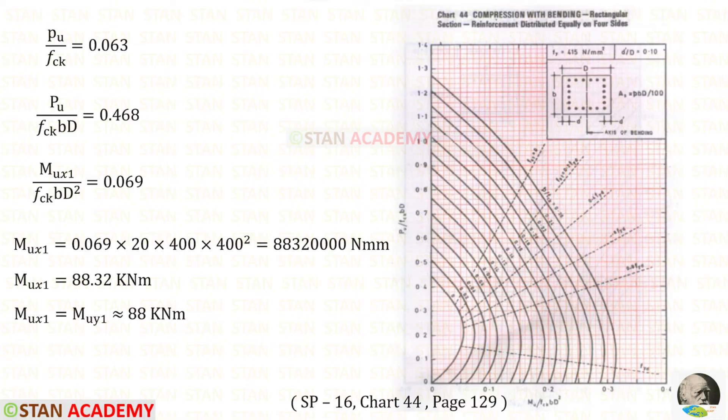We know the values of PU upon FCK and PU upon FCK BD. Using both of them, we can find MUX1 upon FCK BD square. Let us open the chart 44 one more time. Using this value, we can draw a horizontal line. We have the curve 0.06.